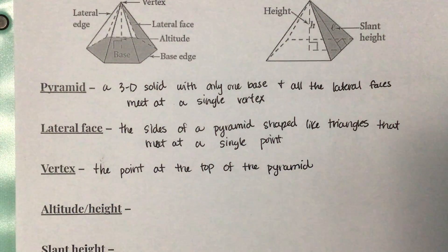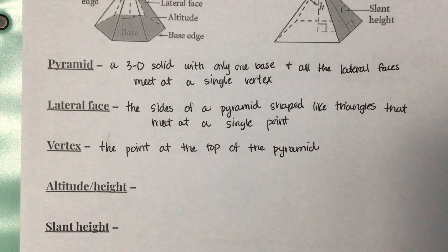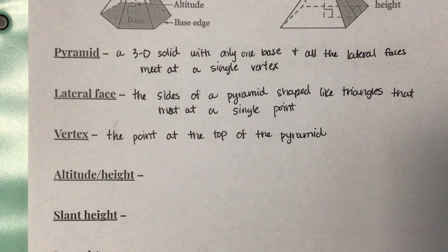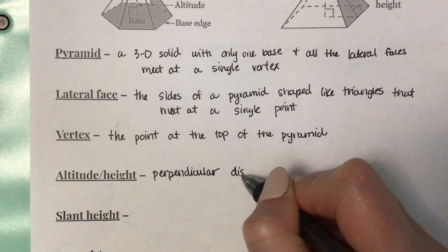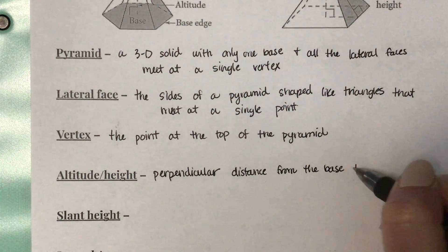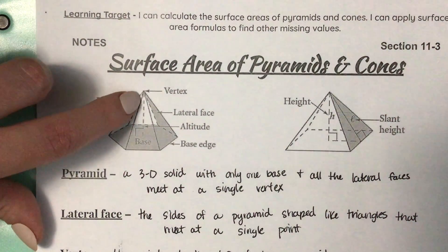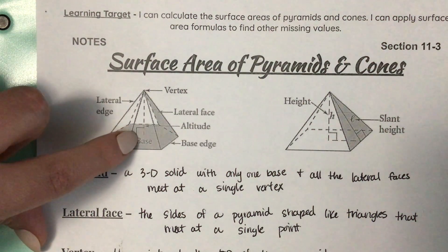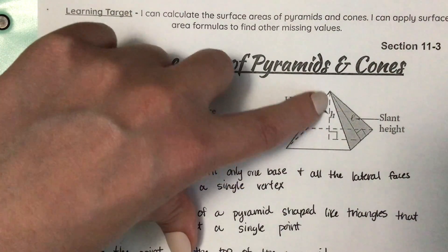Just like with our other lesson on altitude and height of prisms, pyramids and cones also have altitudes or heights. The altitude or height is the perpendicular distance from the base to the vertex. Looking at our picture, this line here would be an altitude because it's perpendicular from the base all the way up to the vertex.